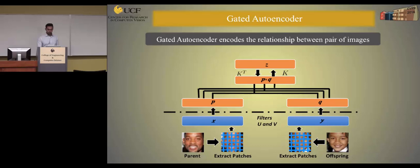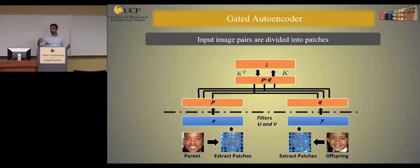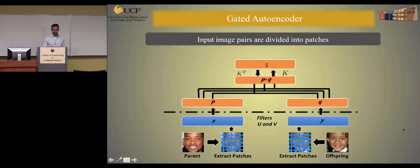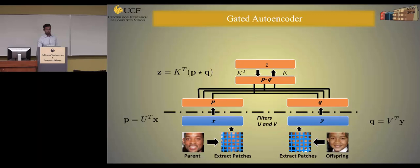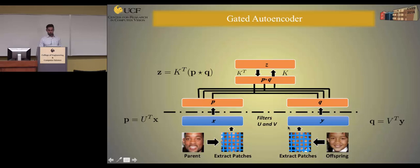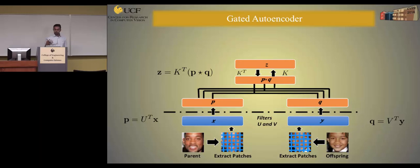Let's see how gated autoencoders work. The input to our system consists of images of parents and their corresponding children. After aligning the images, we divide each image into patches and use the RGB intensity values as input. X and Y are the sets of patches for parent and offspring images. We find three sets of weights: weights U and V encode inputs X and Y into a higher-dimensional space to get new representations P and Q. Then, the element-wise multiplication of P and Q is multiplied by a weight K to get the final representation Z, which we call the mapping units. Z encodes the relationship between the pair of images.